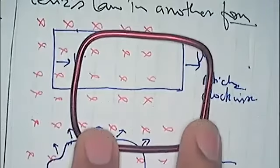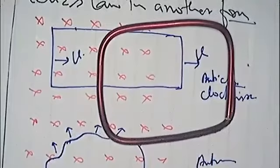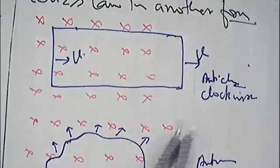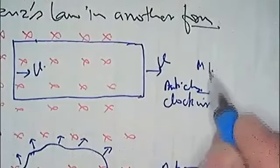It is decreasing because the area inside the loop, magnetic flux is decreasing. In first case, magnetic flux is decreasing.